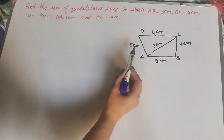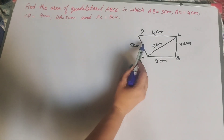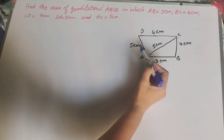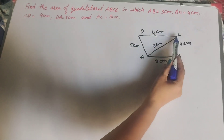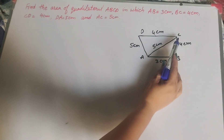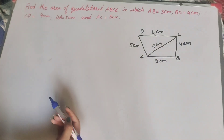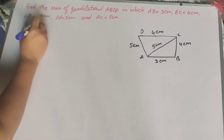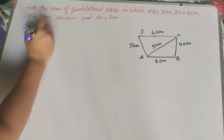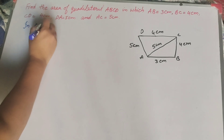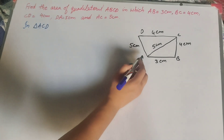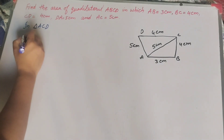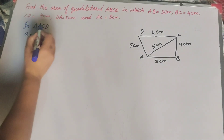We find the area of two triangles: triangle ADC and triangle ABC. We find the area of these two triangles by using Heron's formula. So in triangle ACD, we identify the sides of the triangle.